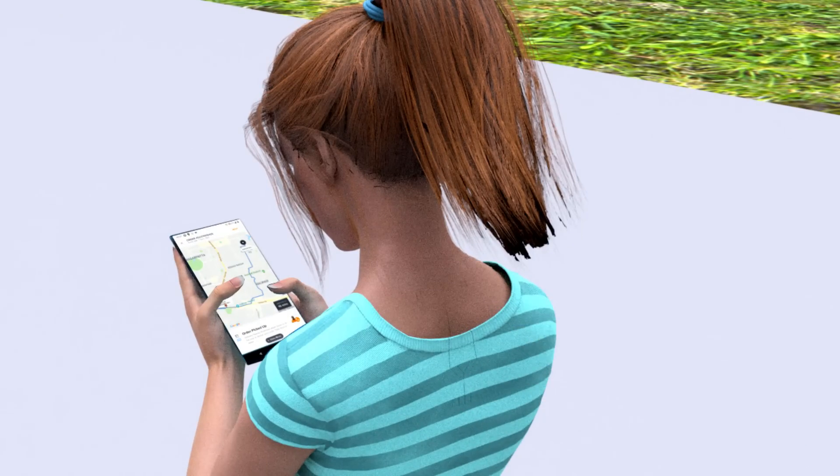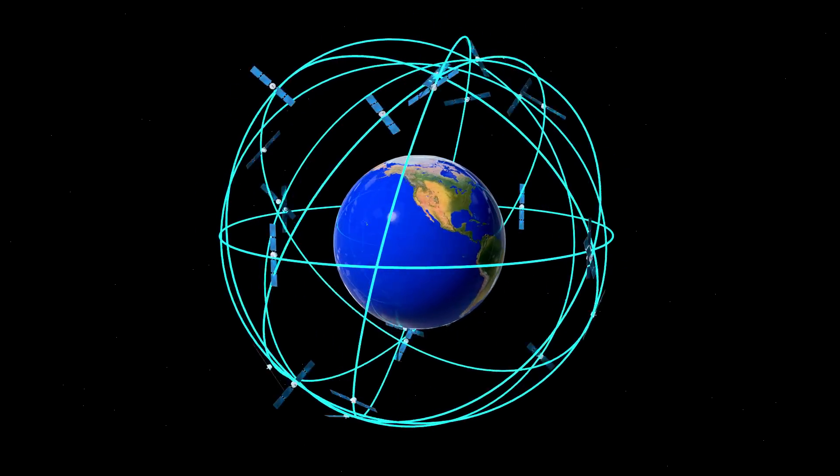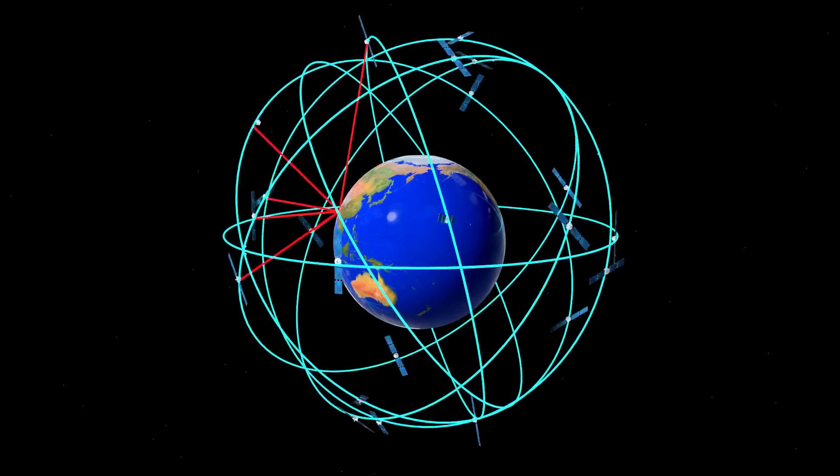GPS is really an interesting technology. It uses a system of 24 satellites continuously orbiting the Earth and requires at least four satellites to track your location.